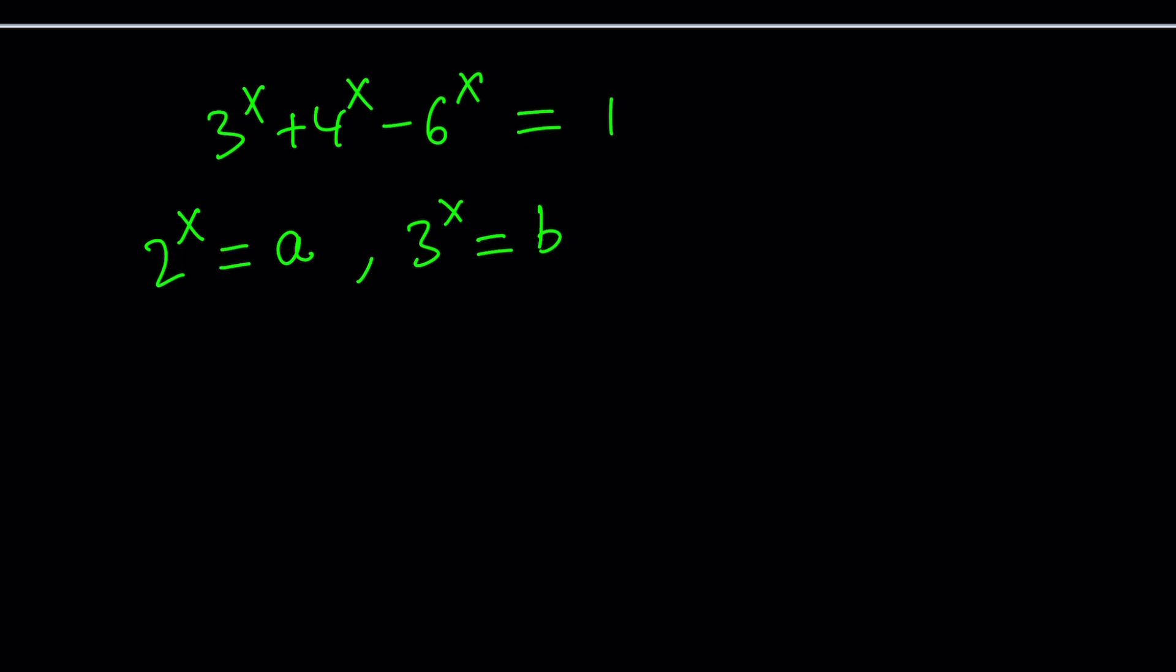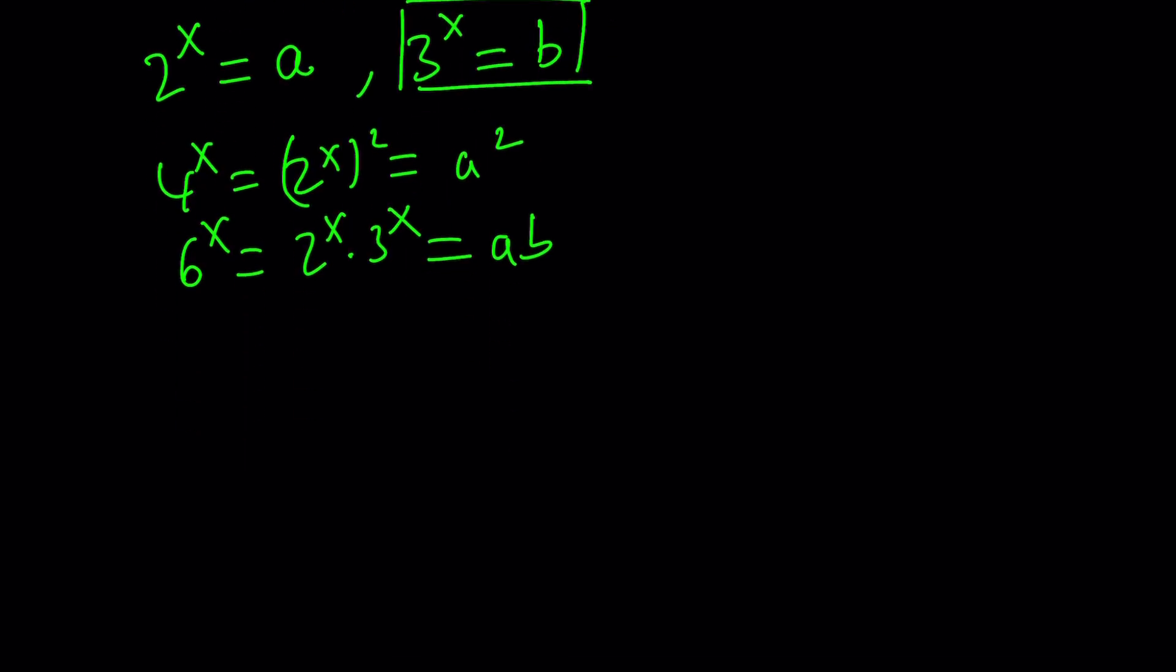So, based on this, we could go ahead and write 3^x = b. We already know that. And 4^x can actually be written as 2^x squared, which is a^2. And 6^x is 2^x times 3^x, which is ab. So we've got everything we need. Let's go ahead and substitute. Replace 3^x with b, 4^x with a^2, 6^x with ab. And we get the following equation.